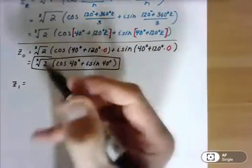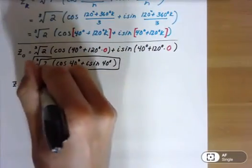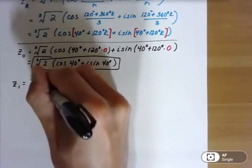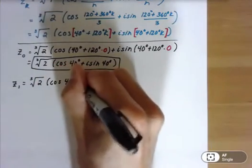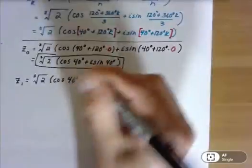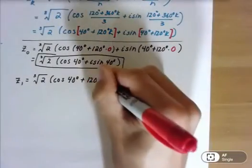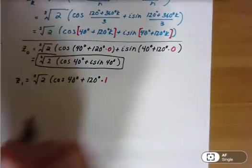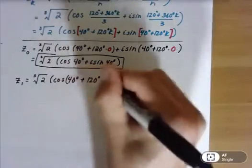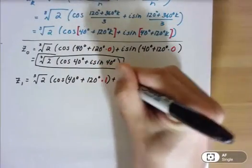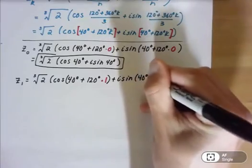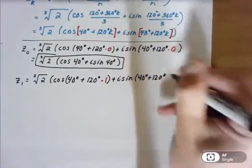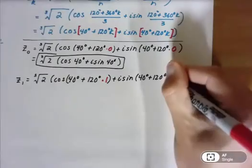So it's 160, but I'll write it out again. So we have the cube root of 2 times cosine of 40 degrees plus 120 degrees, now times 1, so times 1 here, and we'll close that off so we can see, plus i sine of 40 degrees plus 120 degrees, again, times 1 here.